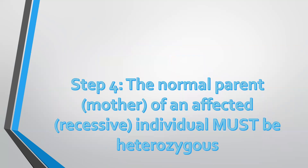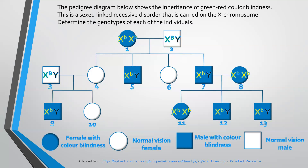Step four: the mother of an affected individual must be heterozygous. Looking at the affected individuals whose mothers are shown — number five, seven, eight, eleven, twelve, and thirteen — we already know their mothers' genotypes. It's number nine whose mother is number four, who we still need to determine.